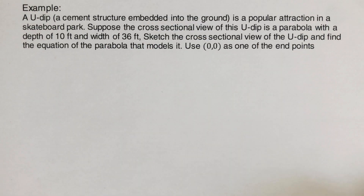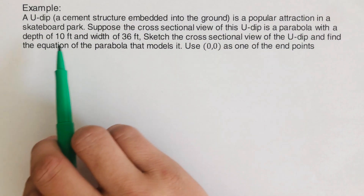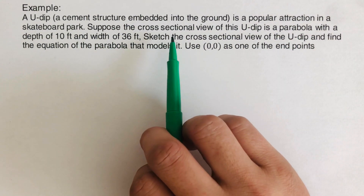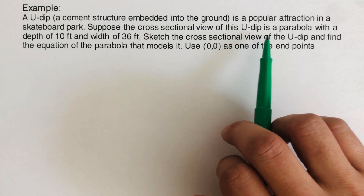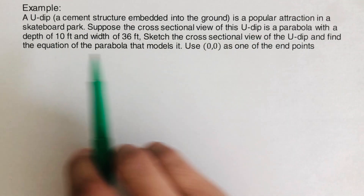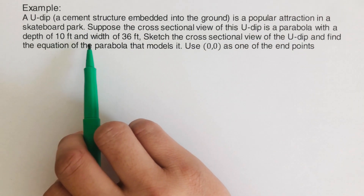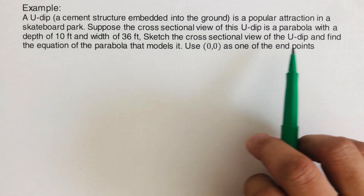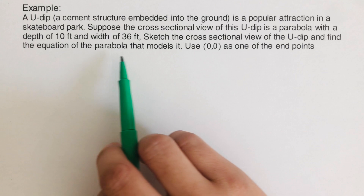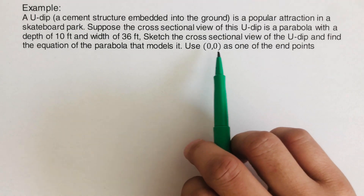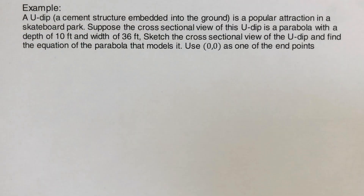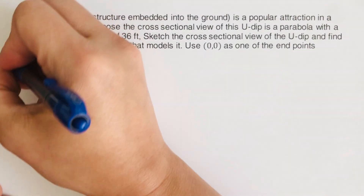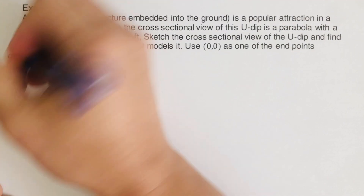The second problem: a U-dip cement structure embedded in the ground is a popular attraction at a skatepark. Suppose the cross-sectional view of this U-dip is a parabola with a depth of 10 feet and a width of 36 feet. Sketch the cross-sectional view and find the equation of the parabola that models it. Use (0, 0) as one of the endpoints.